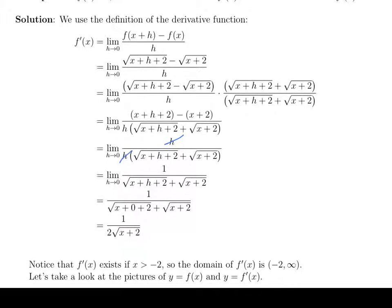But anything bigger than negative 2, then we get a positive number inside that square root, and then we'll be okay. So that means the domain of f prime is this interval from negative 2 to infinity. And I'd like to take a look at the picture of the original function and the derivative.